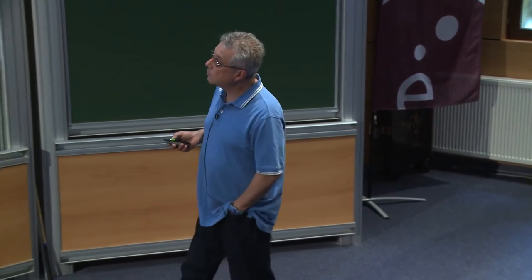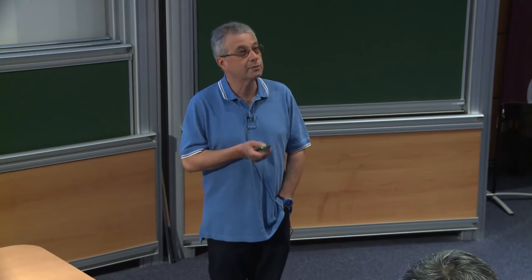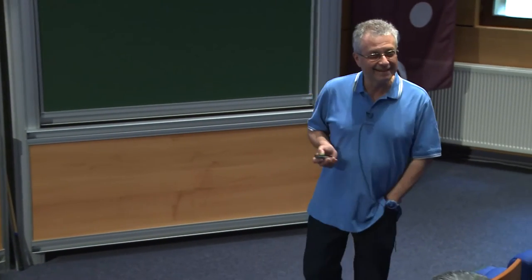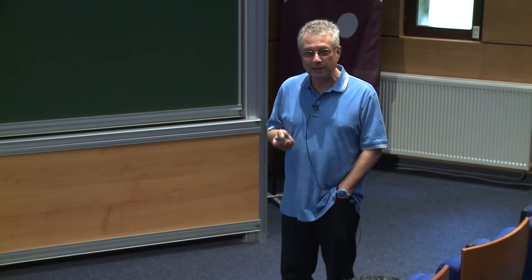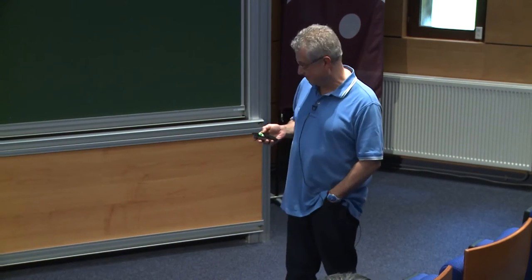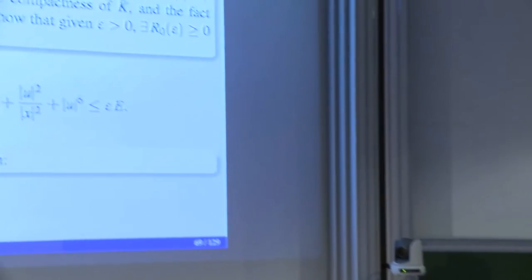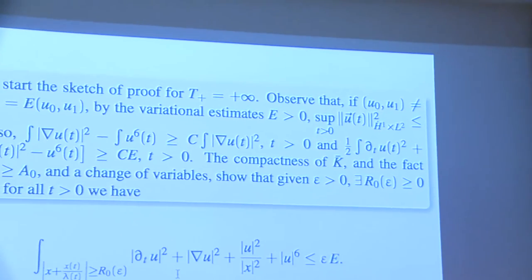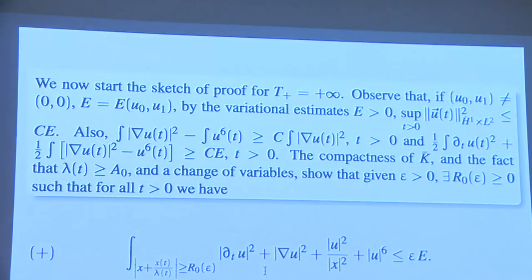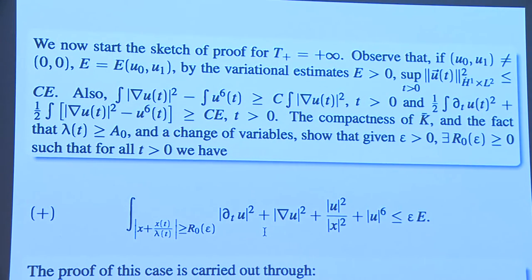I'll have to use these identities — nobody can remember them, but you'll trust me that I'm using them correctly. Once you have the notes, you can verify that your trust was not misplaced. So we start with the proof, and we're going to go back to our variational estimates.